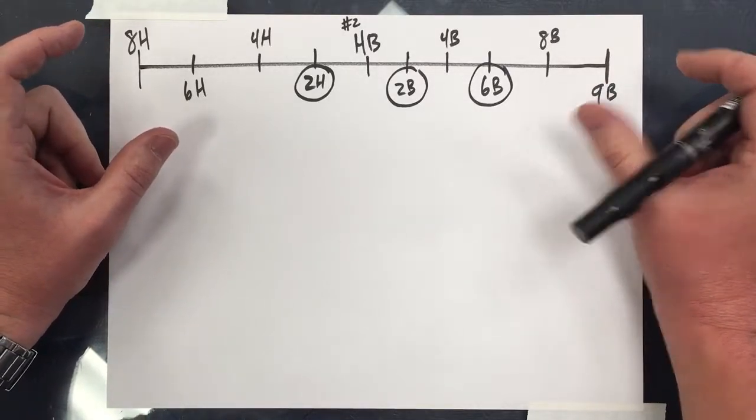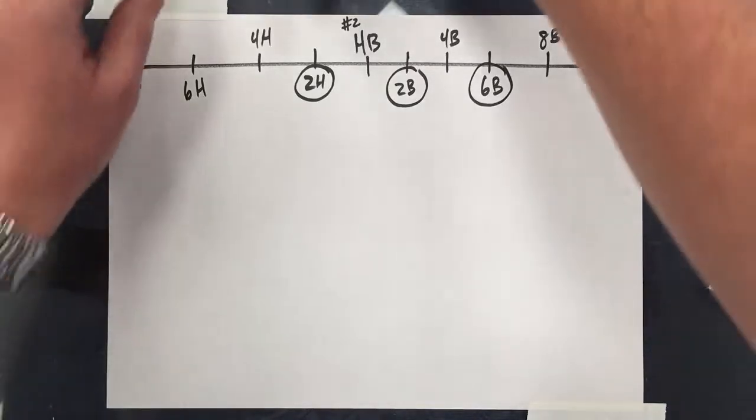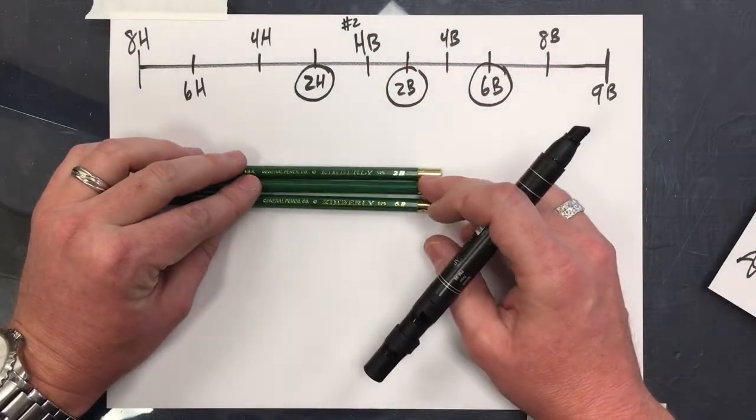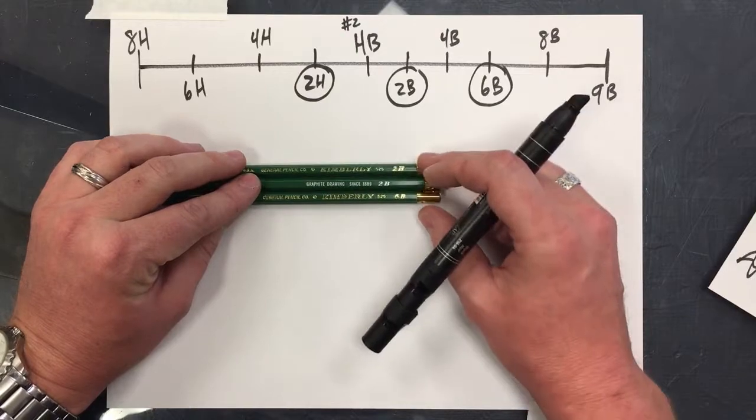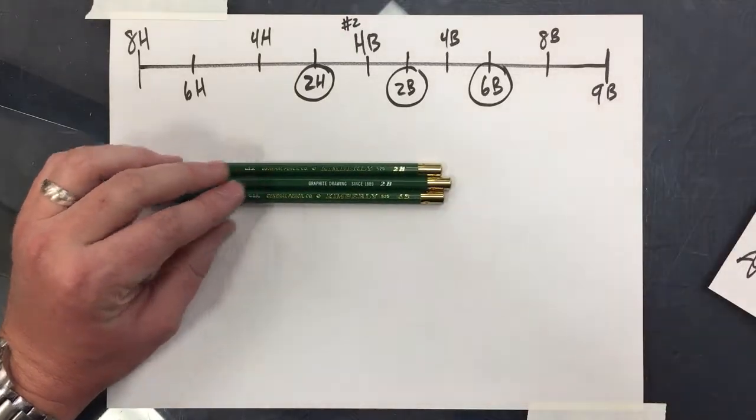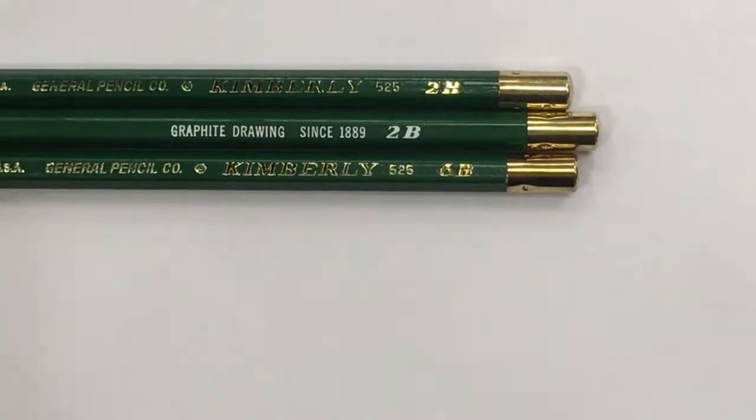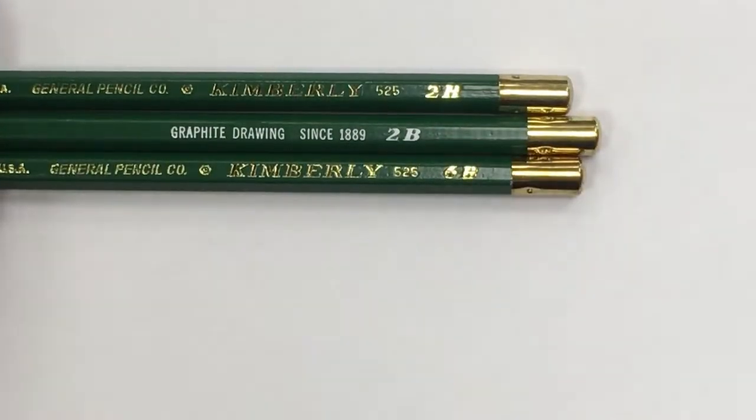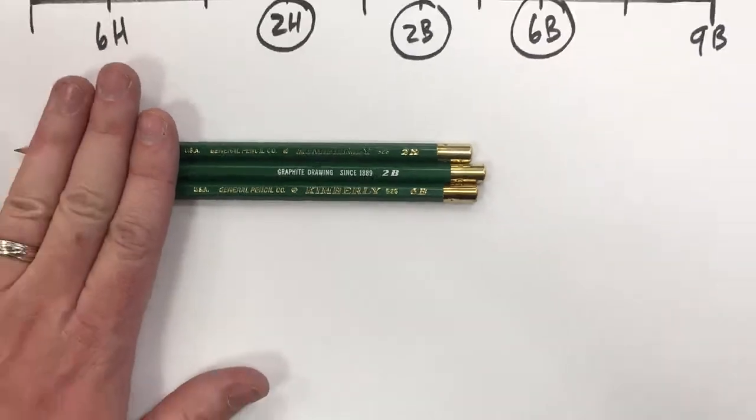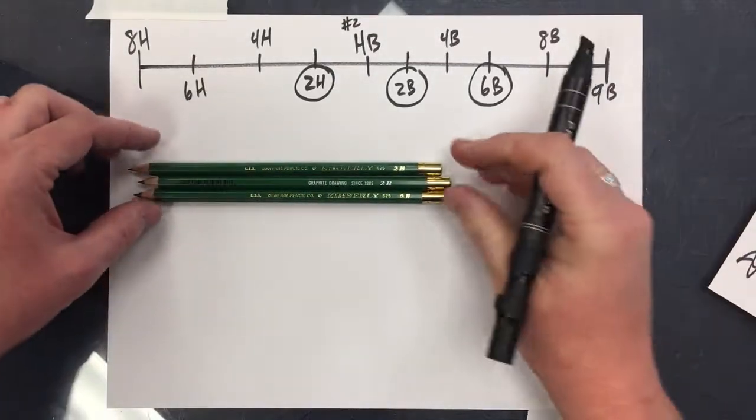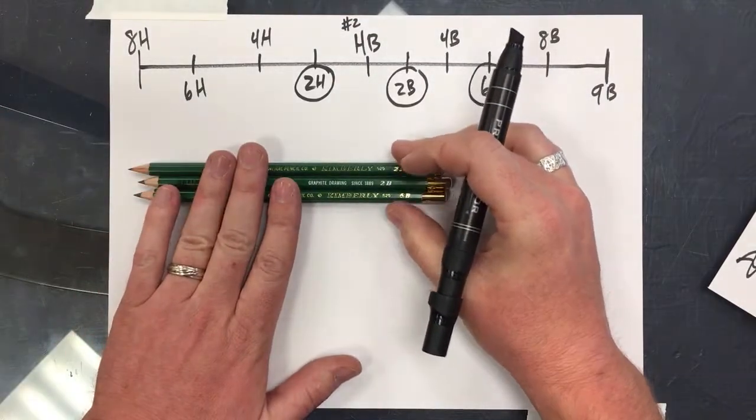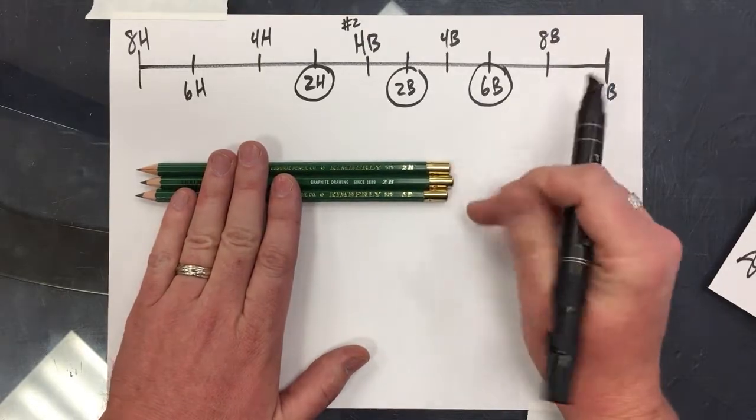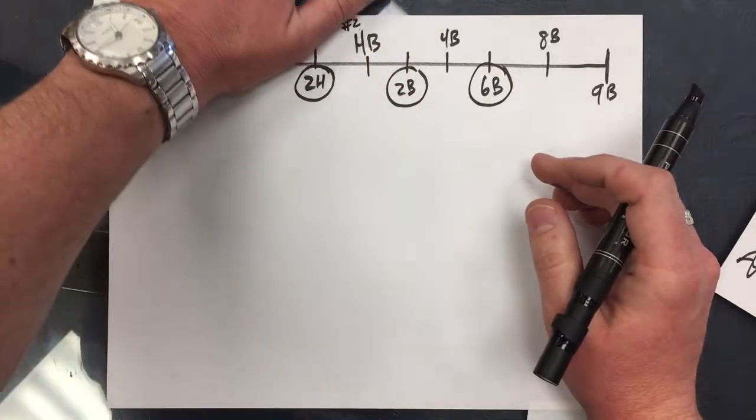So if we get your pencils out here—just like I said, these guys here: 2H, 2B, 6B—they are all about kind of the three different steps, basic steps of shading. More on those in a minute.